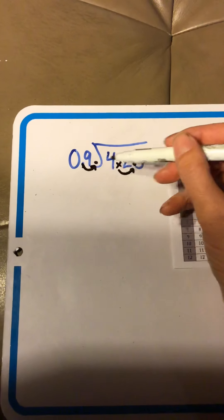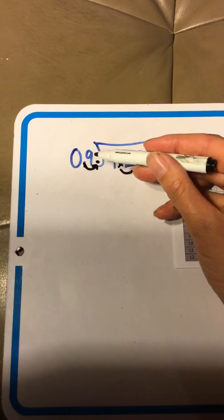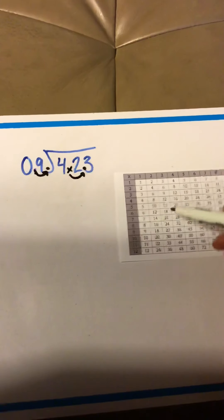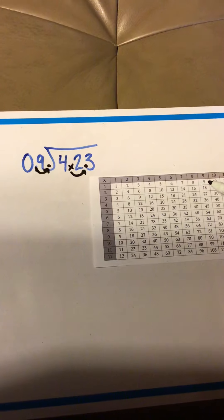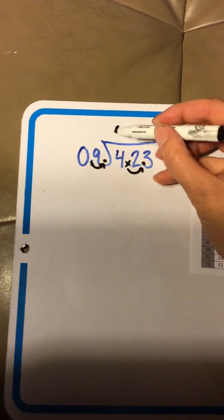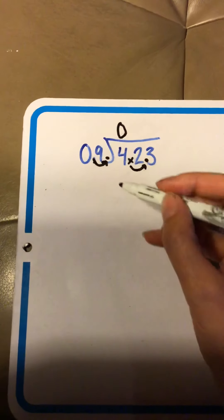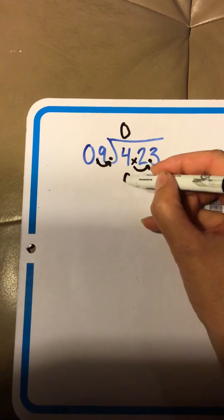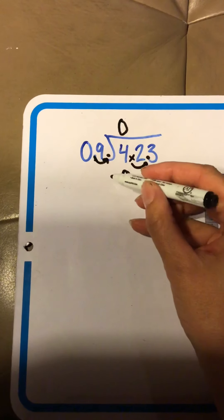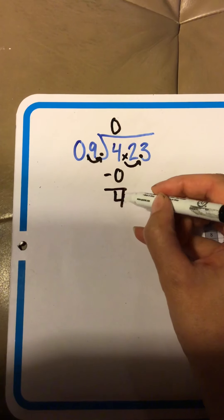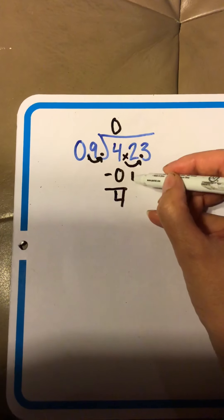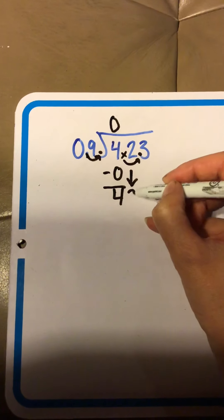4 divided by 9. I look underneath the 9, because we always look under the number at the door. Trying to get as close as possible to 4 without going over. Can't do it. Okay, 0 it is. Nobody gets any cookies today. 0 times 9 is 0. Sister's going to subtract 4 minus 0. We're going to keep all 4 things, right? We didn't use any of them up. Brother's going to bring down the next digit.